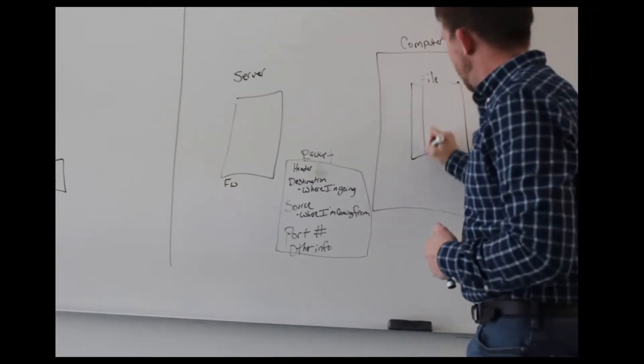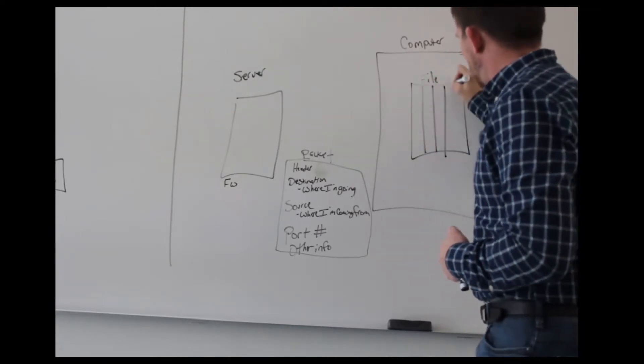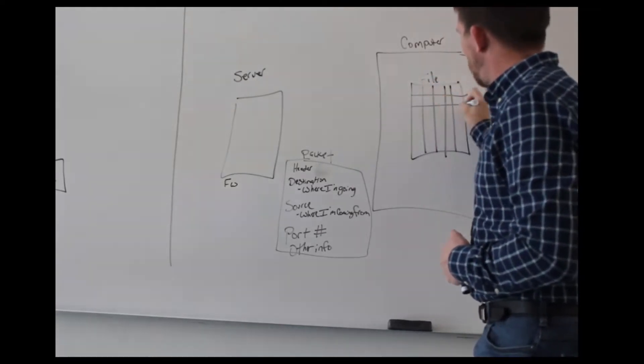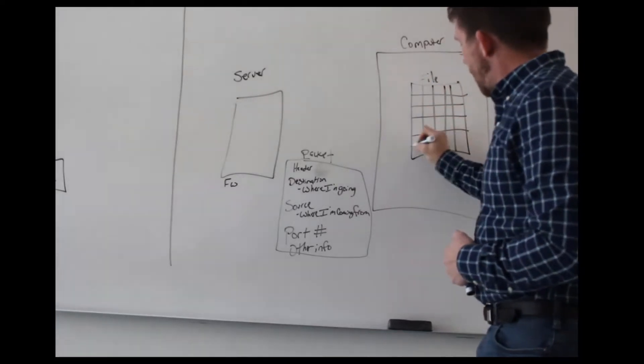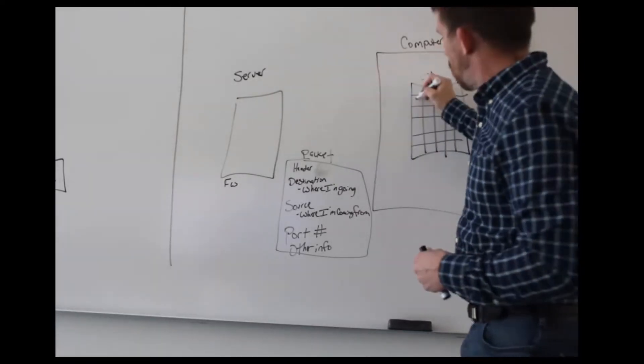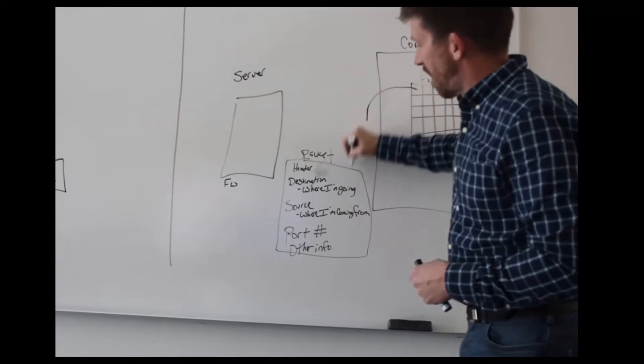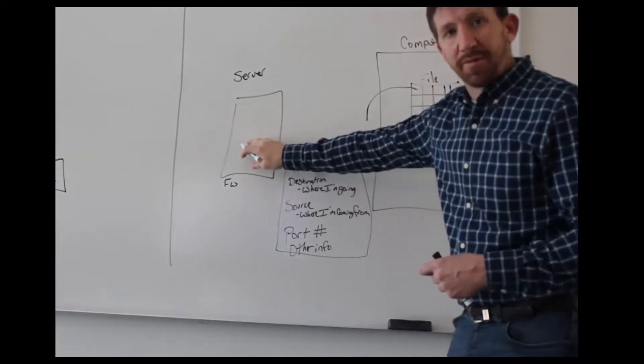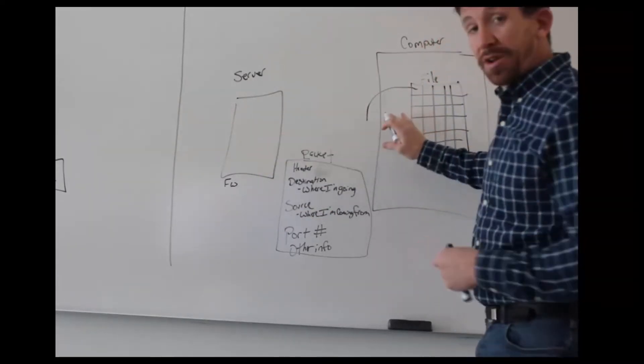What the computer does is it breaks this file up into a whole bunch of little packets and then it sends each packet one at a time through the internet over to the server because that's where we told it to go.